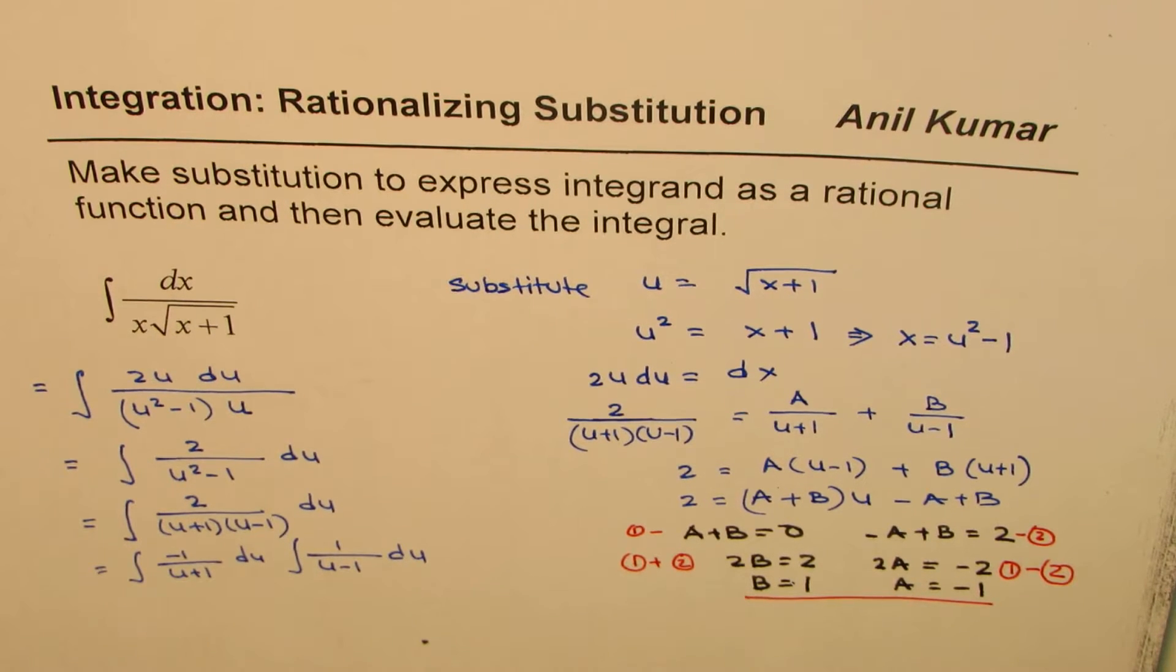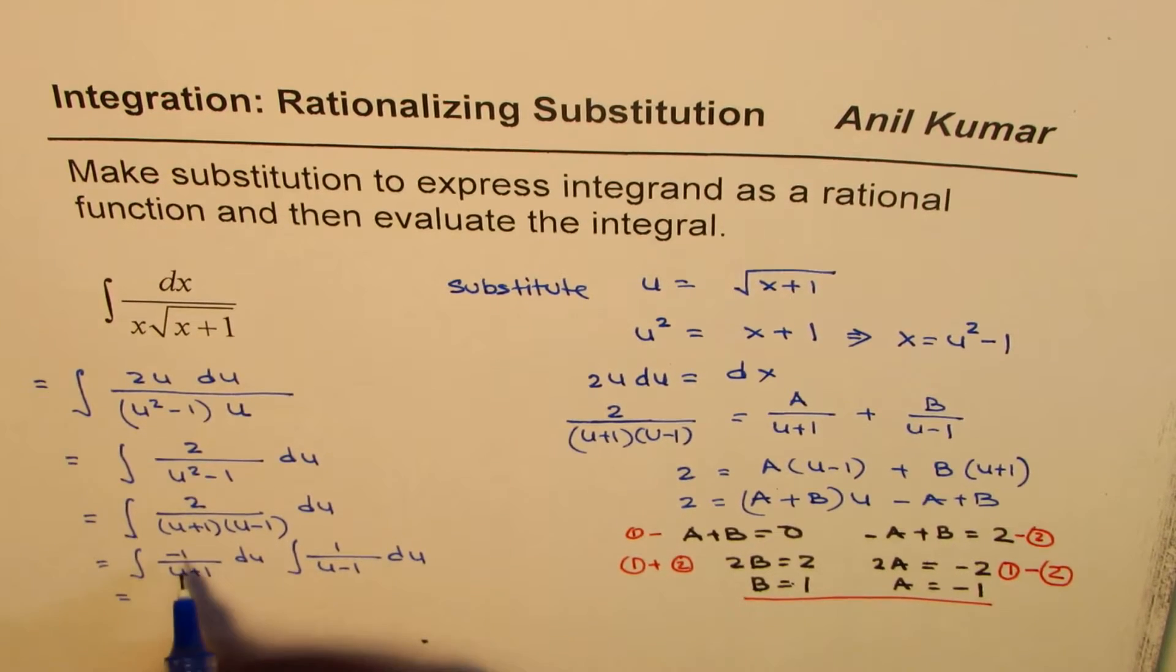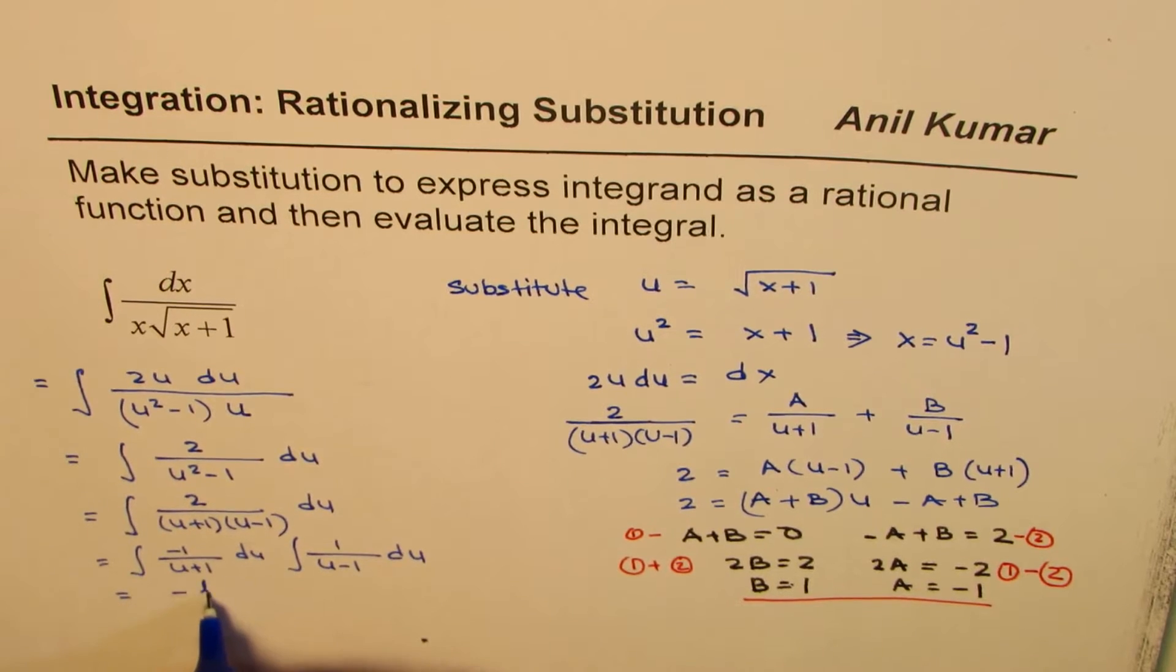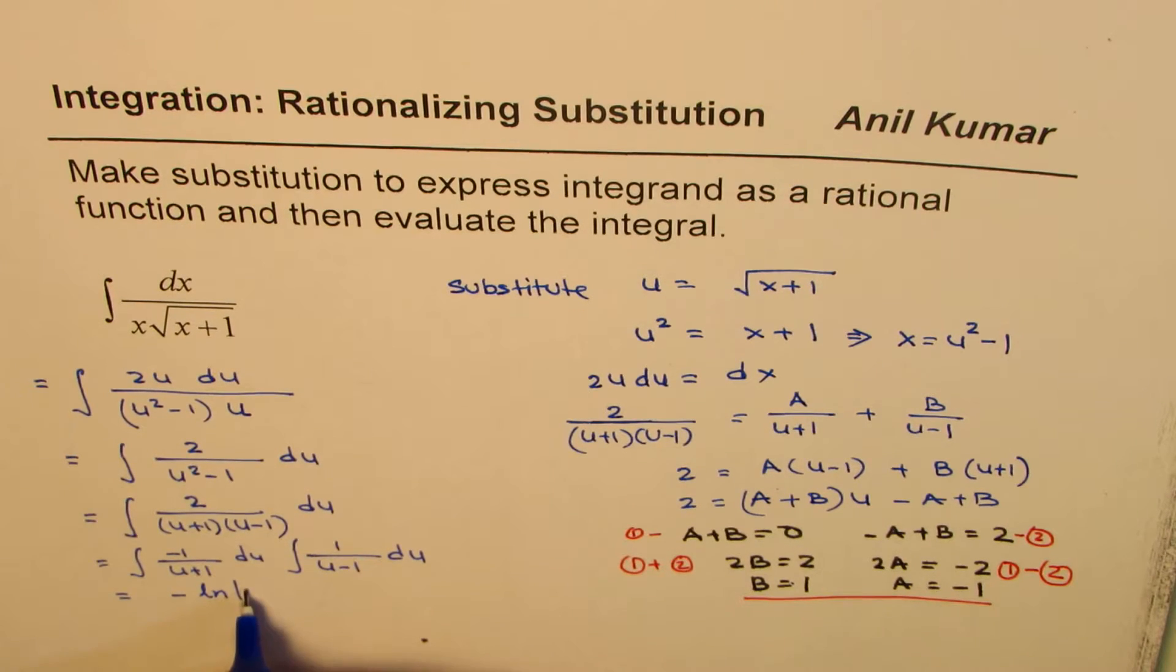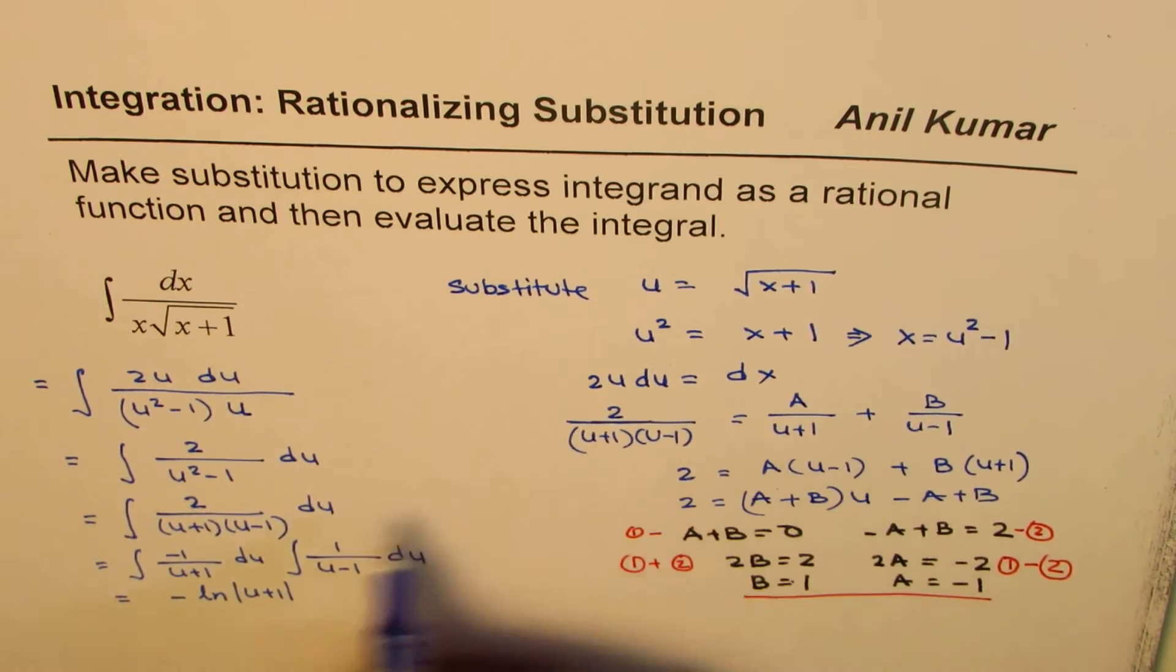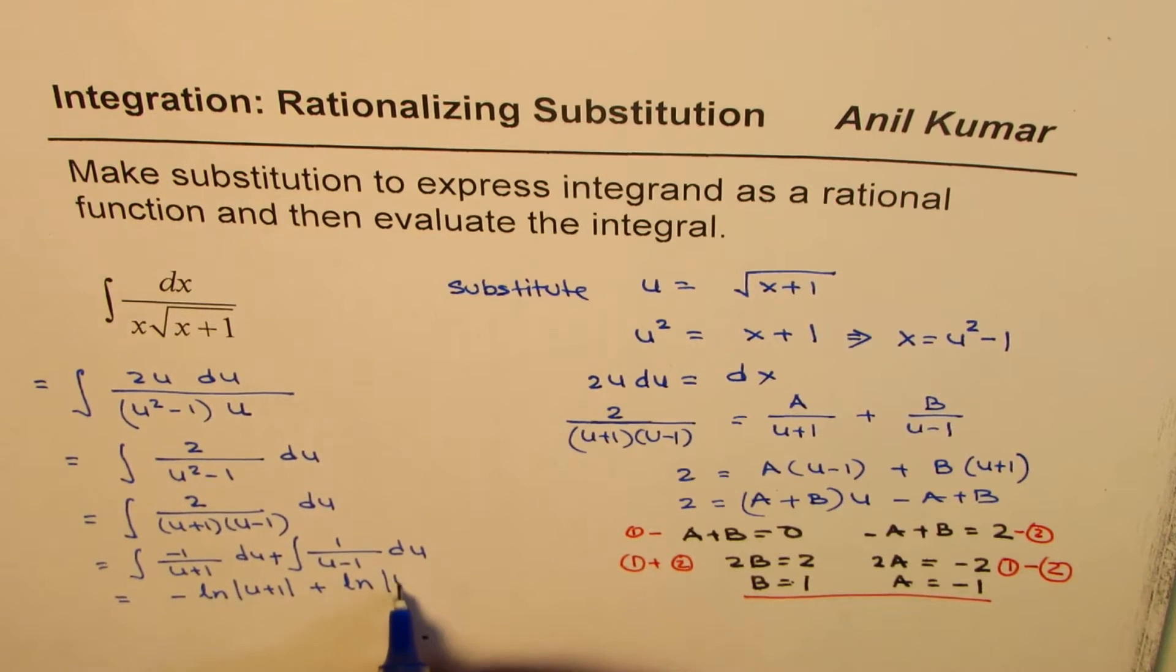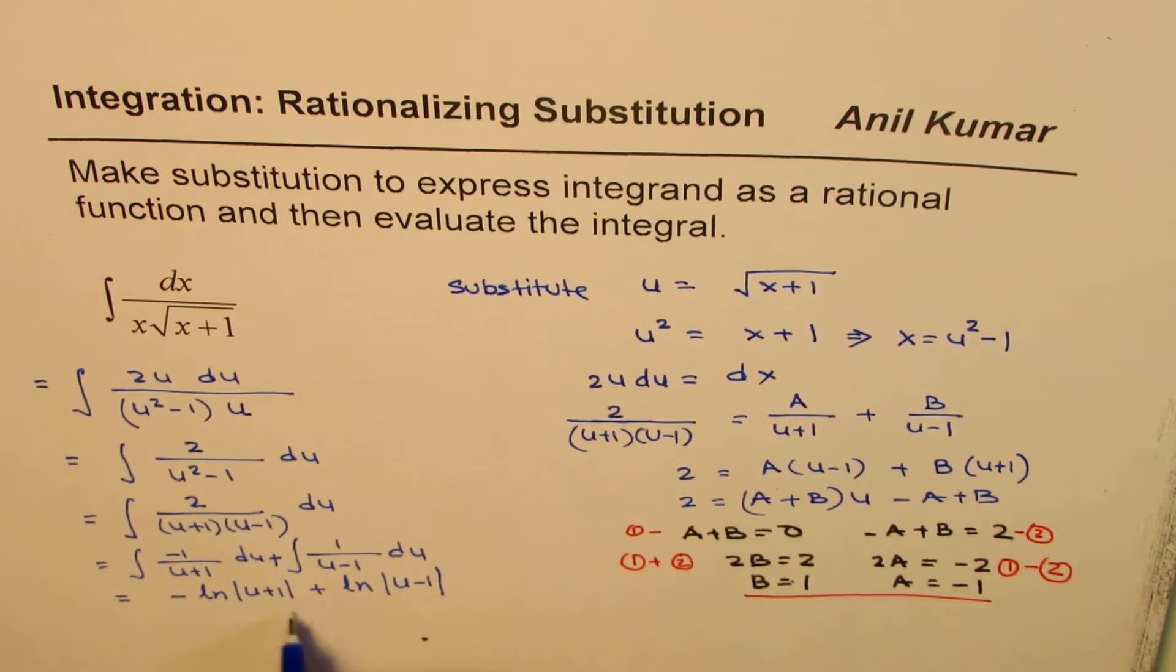And now we know directly we could write this as ln. So it could be written as equal to minus ln absolute value of u plus 1 and I mean this is plus in between here plus ln absolute value of u minus 1.